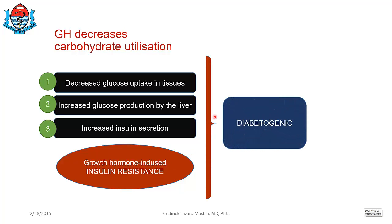For this reason, growth hormone can be diabetogenic. Diabetogenic refers to any factor that can facilitate, cause, or increase the risk of getting diabetes mellitus. Excessive or dysregulated growth hormone causes decreased glucose uptake in tissues, enhanced glucose production by the liver, and increased insulin secretion that does not improve glucose uptake. The result is high blood glucose and insulin resistance — and because insulin resistance is the hallmark of type 2 diabetes, growth hormone is considered diabetogenic.